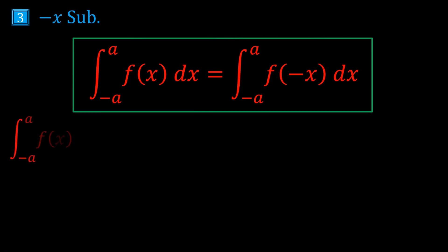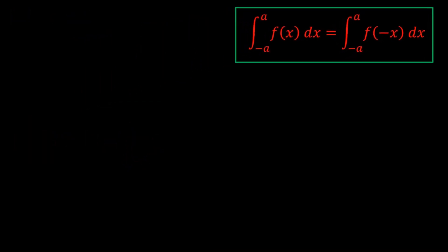Trick number 3, the minus x substitution. To be honest, this is secretly just King's Rule, where if you do King's Rule on the left integral, you get this, and the a and -a cancel, leaving you with f(-x). And the bounds haven't changed at all. So whenever you have the bounds as -a to a, you can use this.